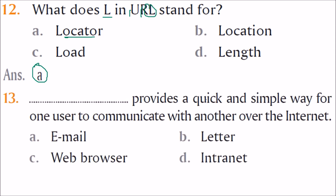What provides a quick and simple way for one user to communicate with another over the internet? While there are many services like WhatsApp, Line, Facebook, and Twitter, email remains the quickest and simplest way for one user to communicate with another, whether officially or unofficially. That is the correct answer.